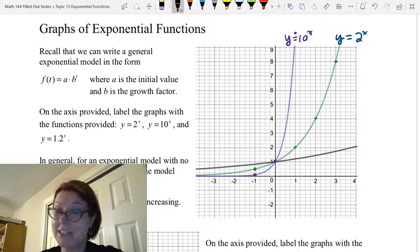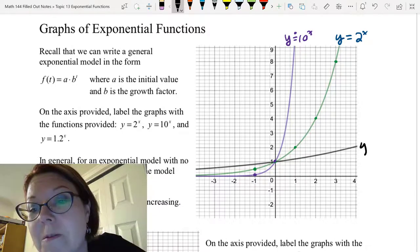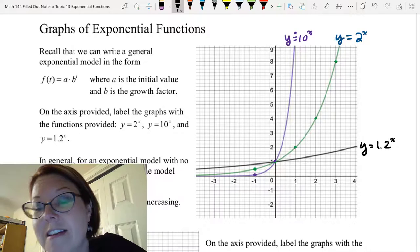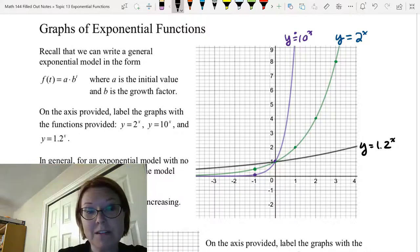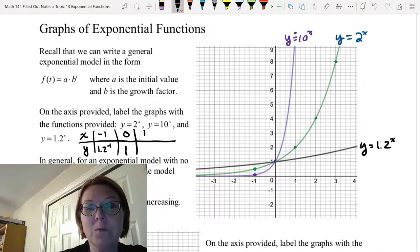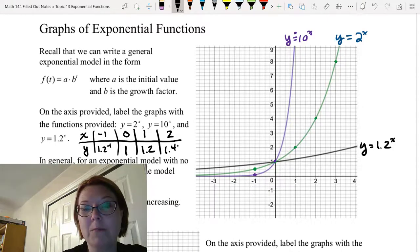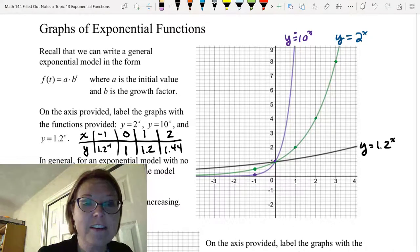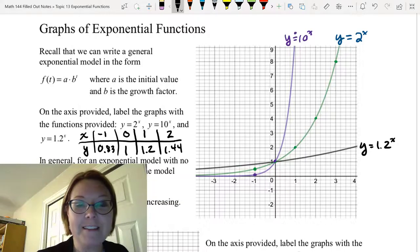By process of elimination, this means the third graph must be y equals 1.2 to the x. And if we wanted to make a little set of values here, we could make a chart for x and y. At an x value of negative 1, we would have 1.2 to the negative first power. At 0, 1.2 to the 0 power would be 1. At 1, 1.2 to the first power would just be 1.2. And at 2, 1.2 to the second power would be 1.44. Now that 1.2 to the negative 1, that's like 0.83 with the 3 repeating.